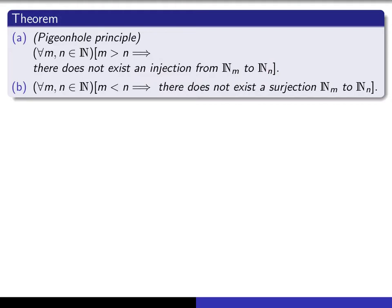The other result is sort of the opposite. If m is smaller than n, then it's impossible for there to be a surjection from N sub m to N sub n. You can't make it onto. You just don't have enough elements in this set to completely cover the N sub n.